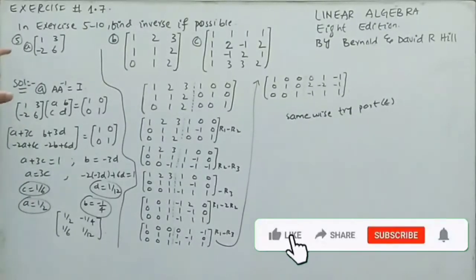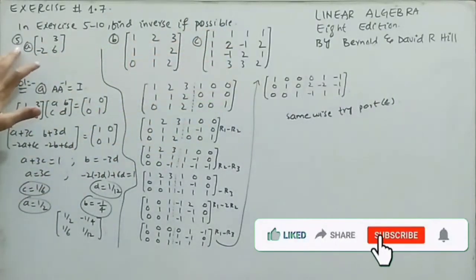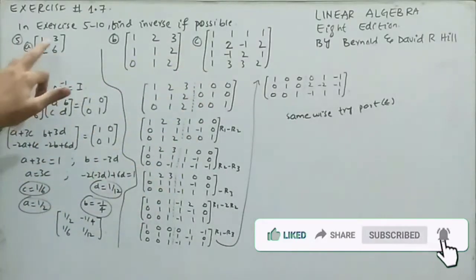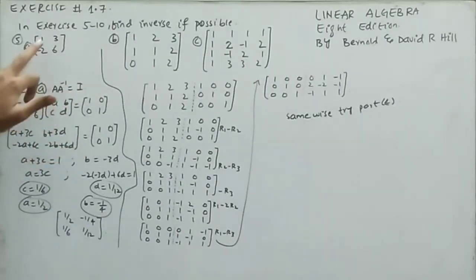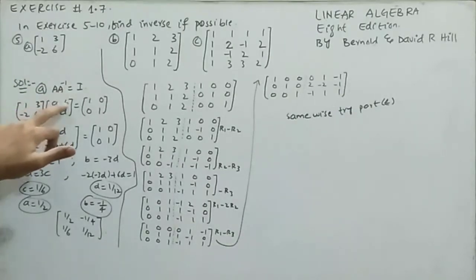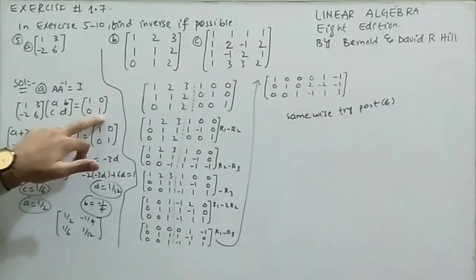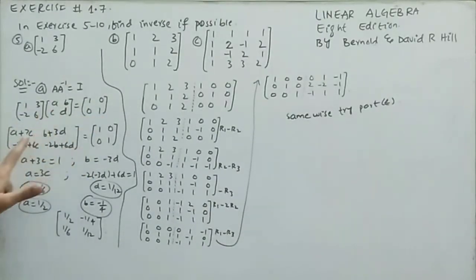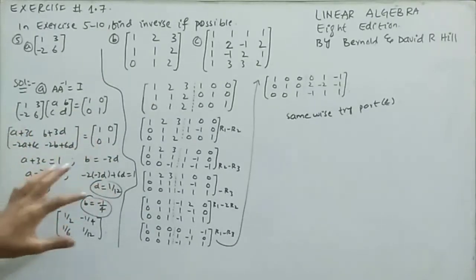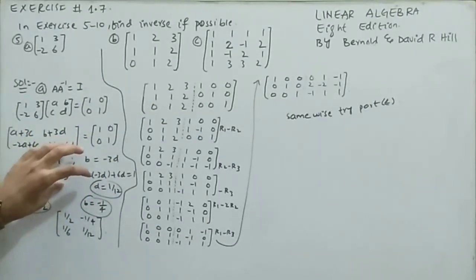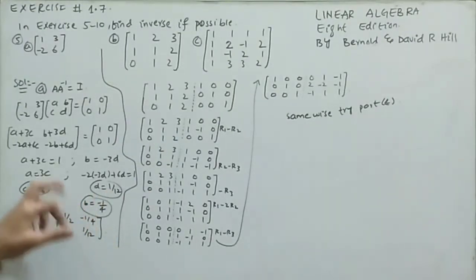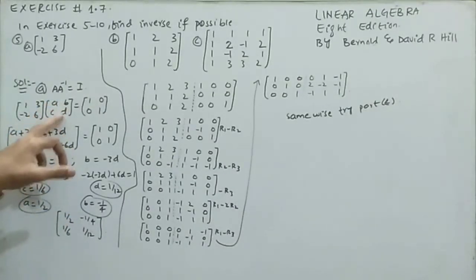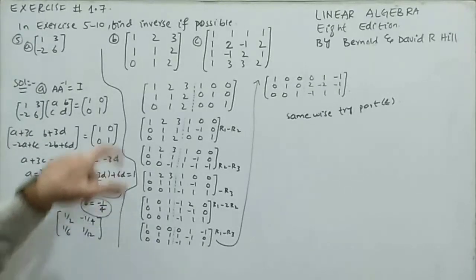Exercises 5 to 10: find the inverse if possible. Part (a): find the inverse of A = [1, 3; -2, 6]. Using A · A⁻¹ = I with A⁻¹ = [a, b; c, d], multiplying and solving the four linear equations gives a = 1/2, b = -1/4, c = 1/6, d = 1/12. So A⁻¹ = [1/2, -1/4; 1/6, 1/12].